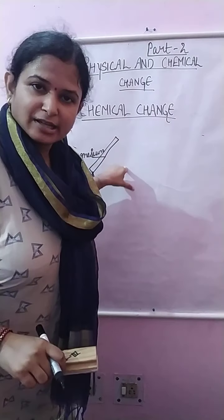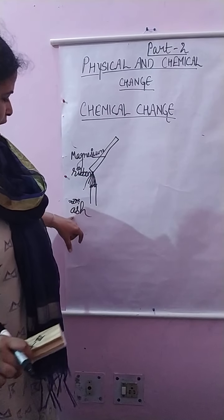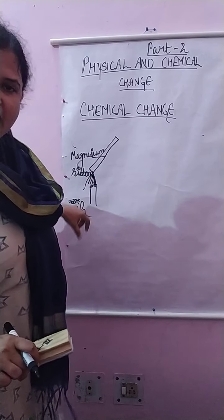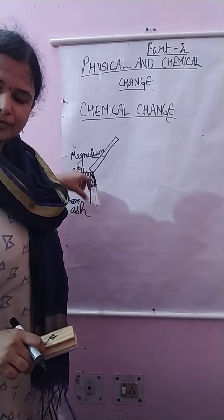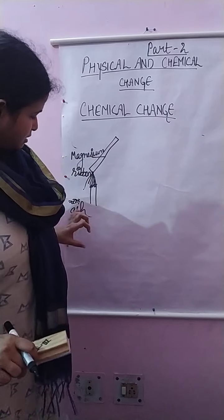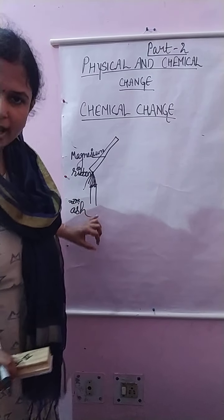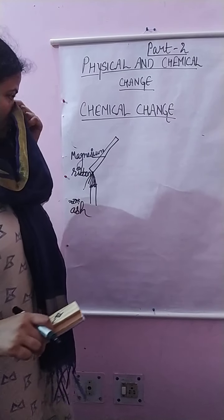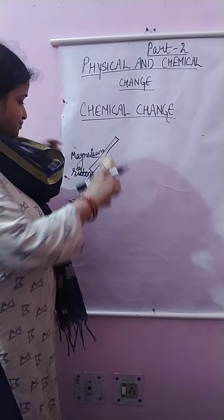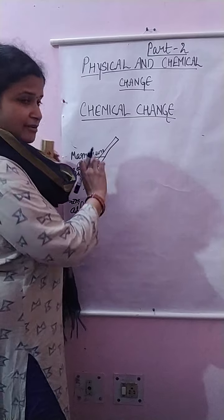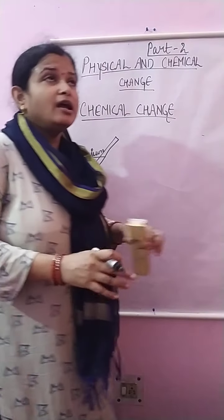When we are burning the magnesium ribbon, ash starts to collect. We can write the reaction like this. Listen children very carefully — the reaction you are going to study more about in class 10.